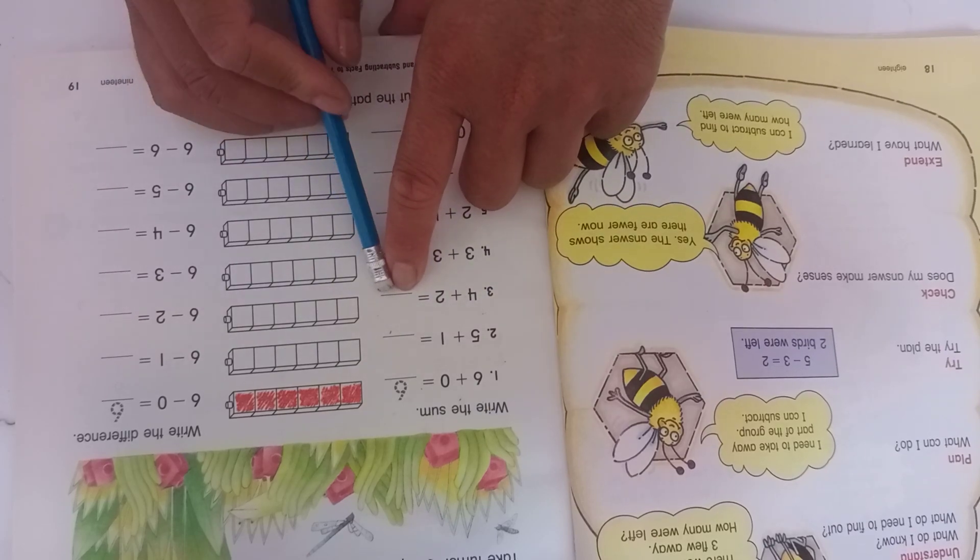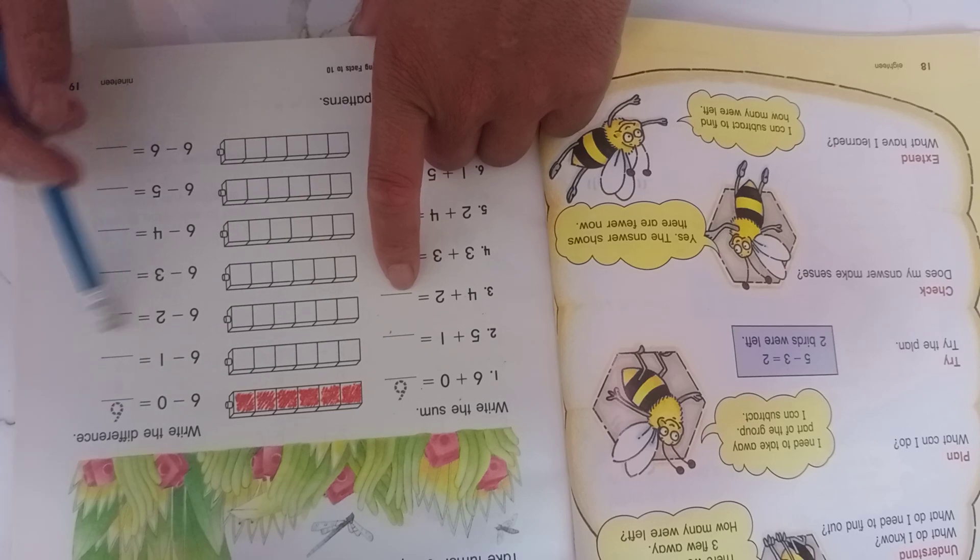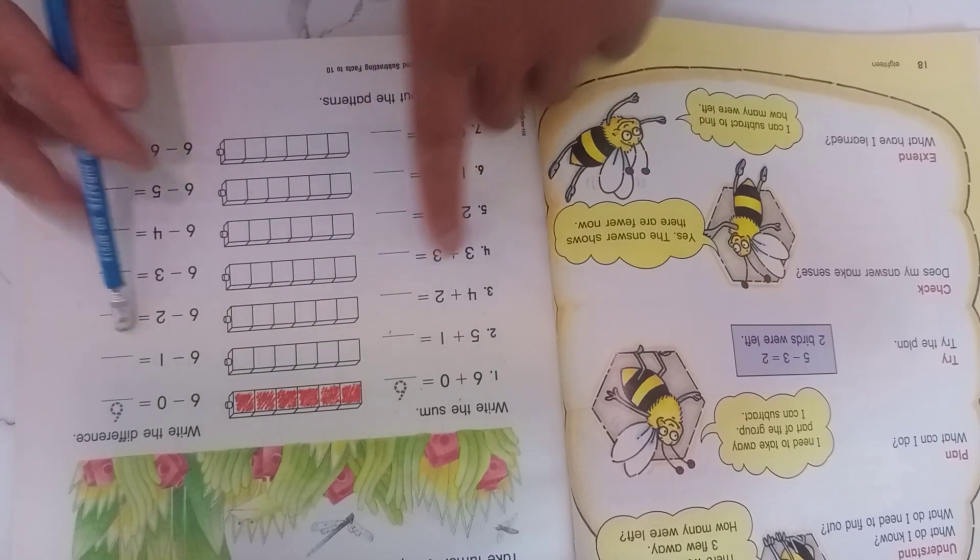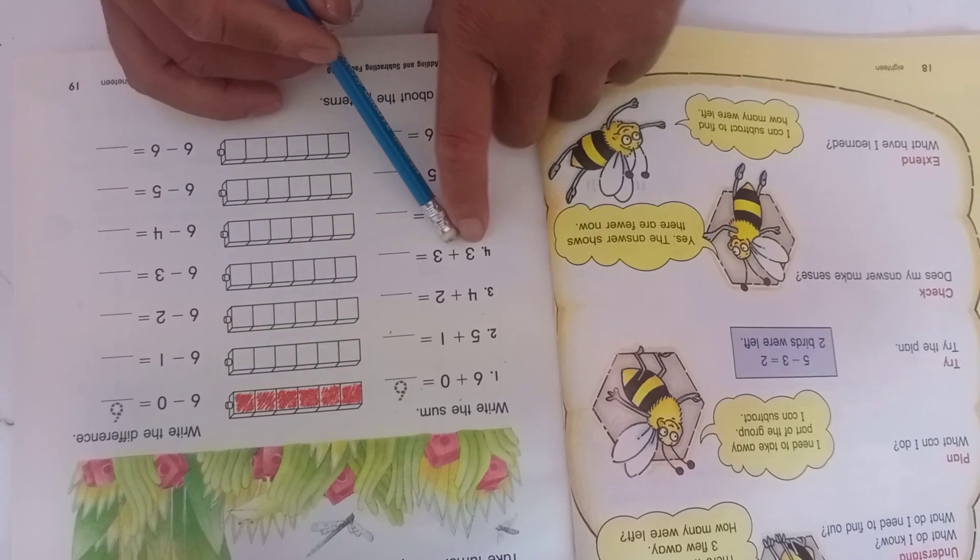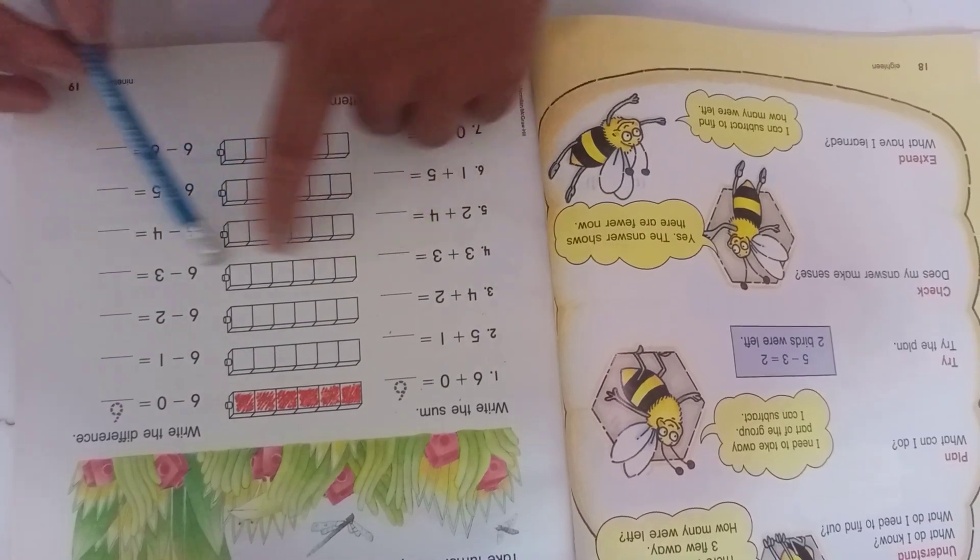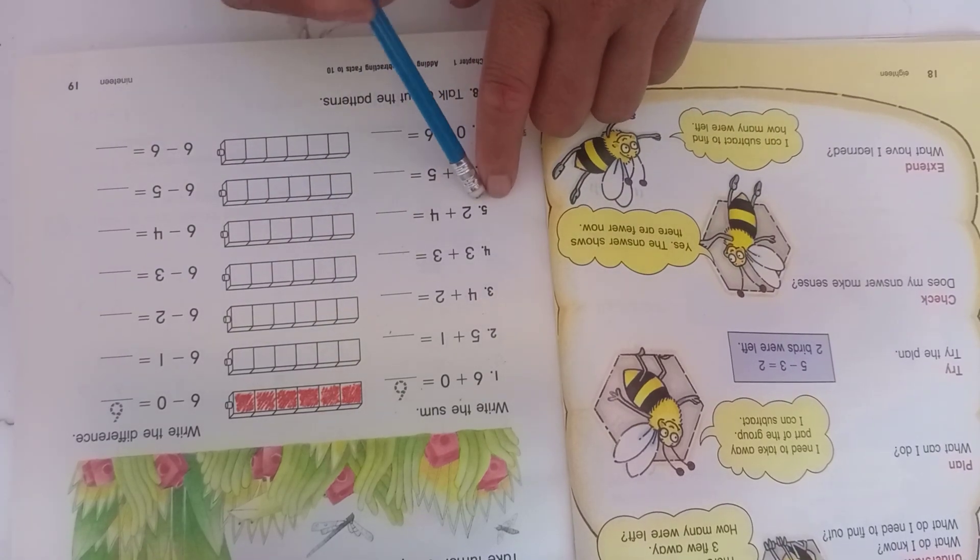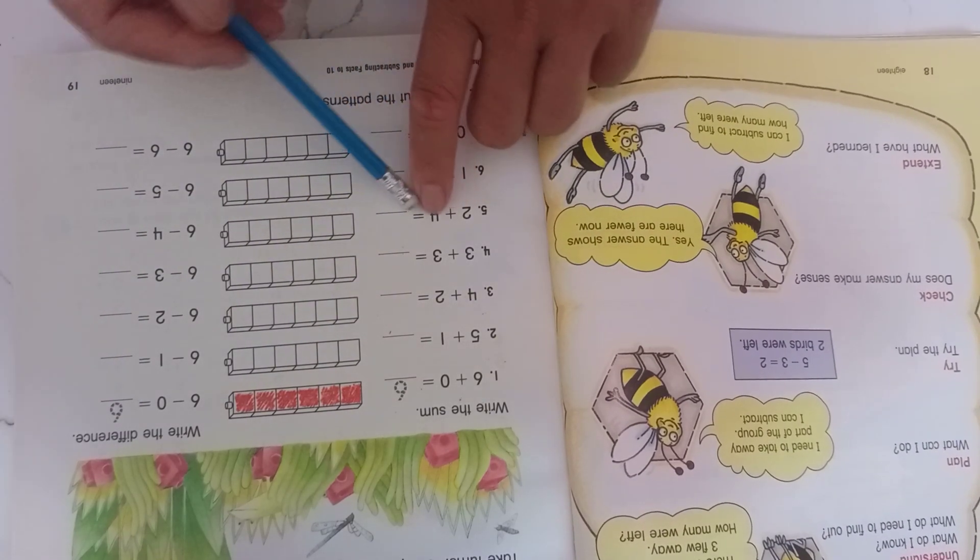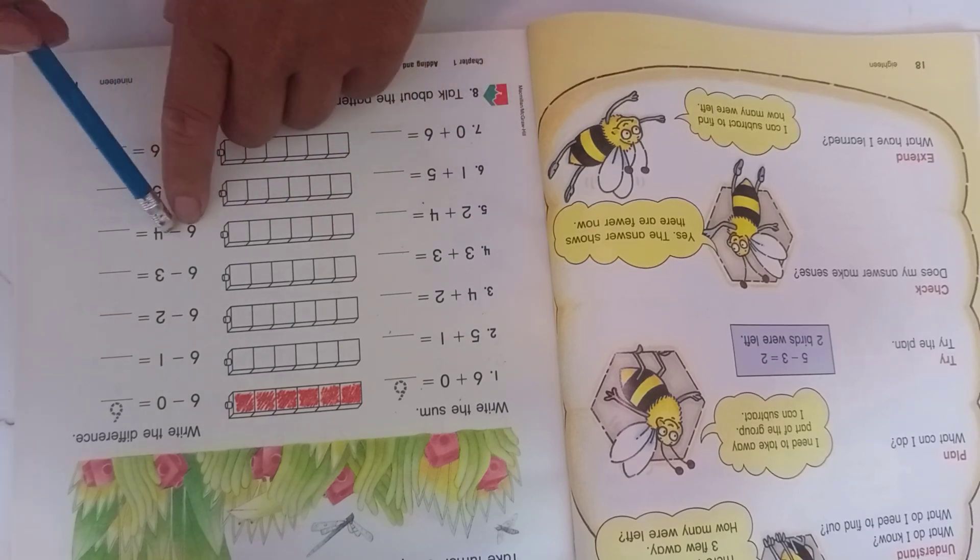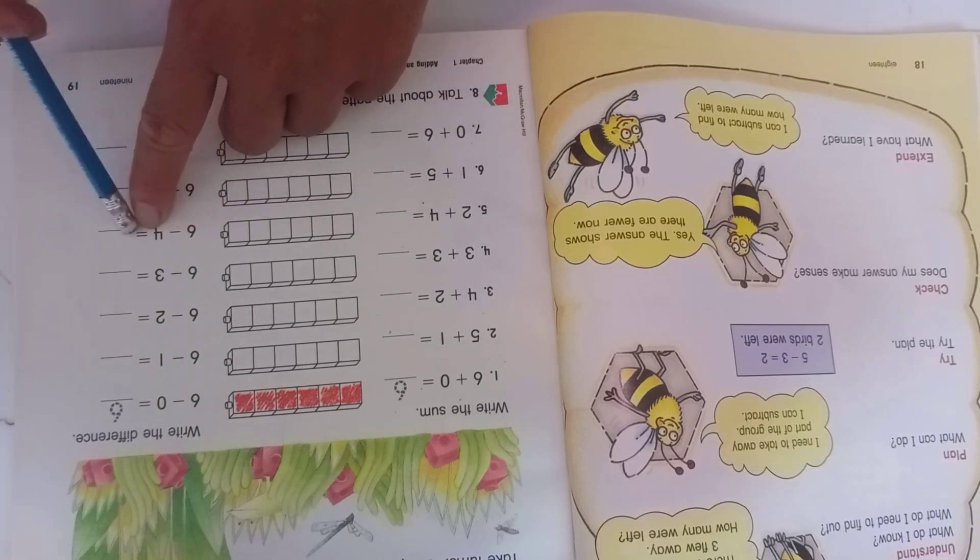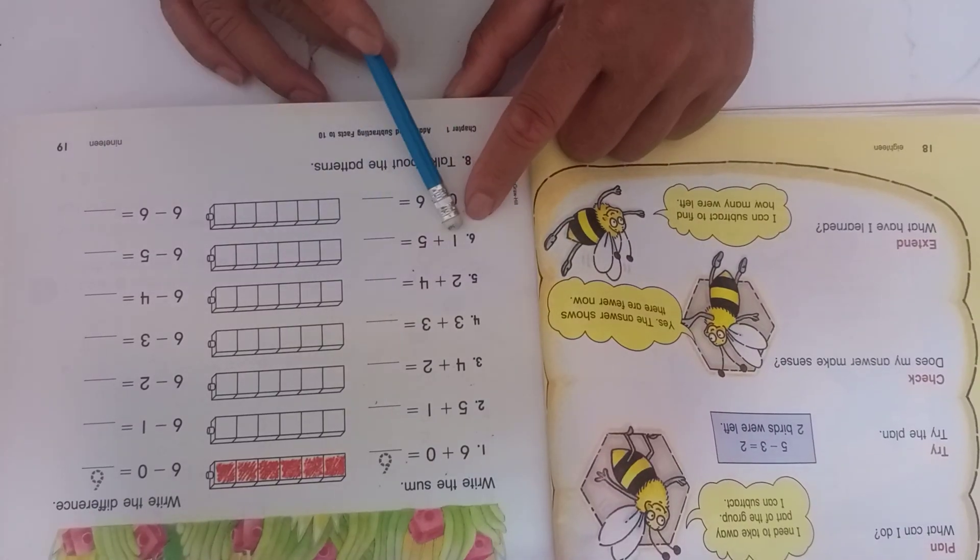Number four is three plus three equals six, and six take three equals three. Number five is two plus four equals six, and the difference is six take four equals two. Now continue together.